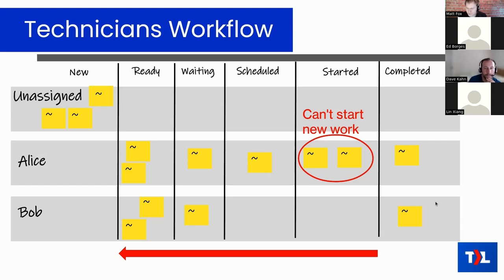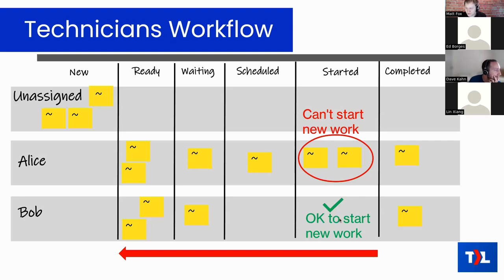For Bob, who has no tickets in started, he is free to start new work. He looks at scheduled — nothing there that needs doing now — then checks the waiting column — nothing is ready to work on. So he goes to the ready column, picks what's at the top, drags it to started, and begins working on it. That is how Bob would work.